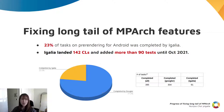As a first step, we participated in fixing the long tail of pre-rendering on Android, and 23% of tasks was completed by EGALIA. Related to this, EGALIA landed 142 CLs and added more than 90 tests until October this year.